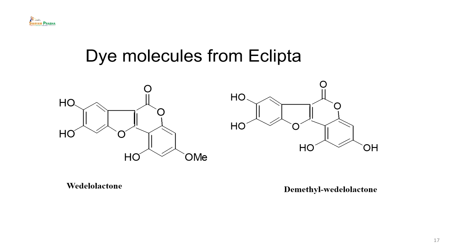Then comes the dye molecules from eclipta. This is the dye which was black in color, and eclipta is known to have structures called wedelolactone and demethyl wedelolactone. The O-methoxy group is missing in the right-hand compound, but the two together are present in the extract of eclipta stems and the aerial part of the Eclipta alba plant — a small plant used not only for dyeing fabric but also for making hair dye.